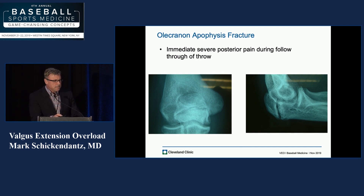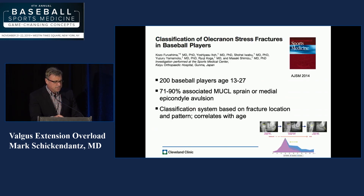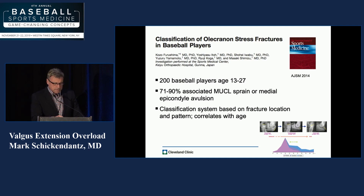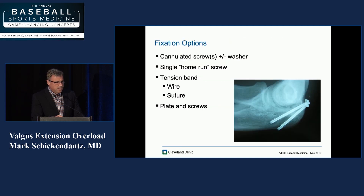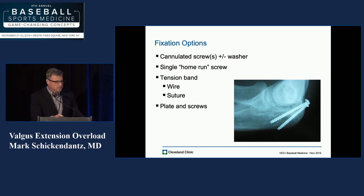More commonly we see olecranon apophysial fractures, characterized by immediate severe posterior pain during the follow-through of a throw. The characteristic x-rays — as Dr. Potter discussed yesterday — show a classification scheme for olecranon stress fractures. We see the association with ulnar collateral ligament problems in the face of olecranon fractures. Our fixation options for true bicortical fracture include cannulated screws, a single home-run screw if technically feasible — that's a nice way to do it. Tension bands: stay away from wire; suture tension band is probably better. Plates and screws are typically reserved for revision situations with non-unions.